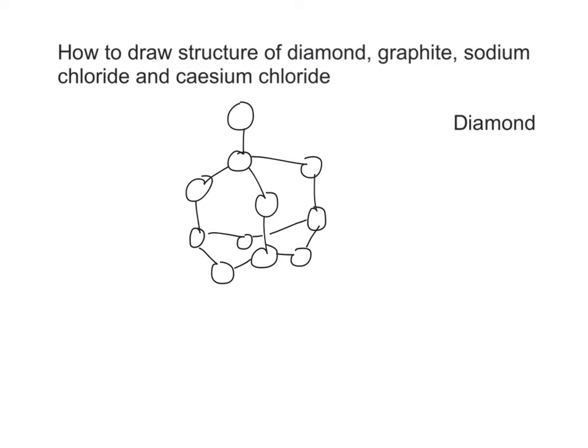After that, we can draw three more carbon atoms as shown. You can see each carbon atom is bonded tetrahedrally to four other carbon atoms.